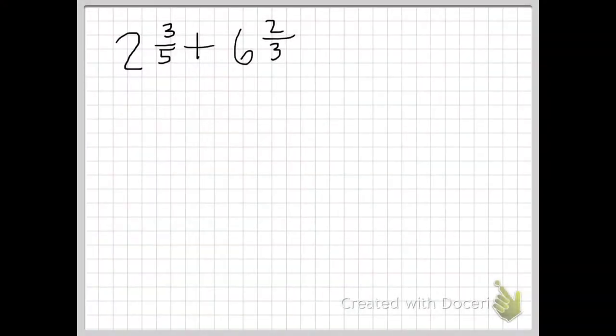Today we're going to be adding mixed numbers with unlike denominators and with regrouping. Here we have 2 and 3 fifths plus 6 and 2 thirds.